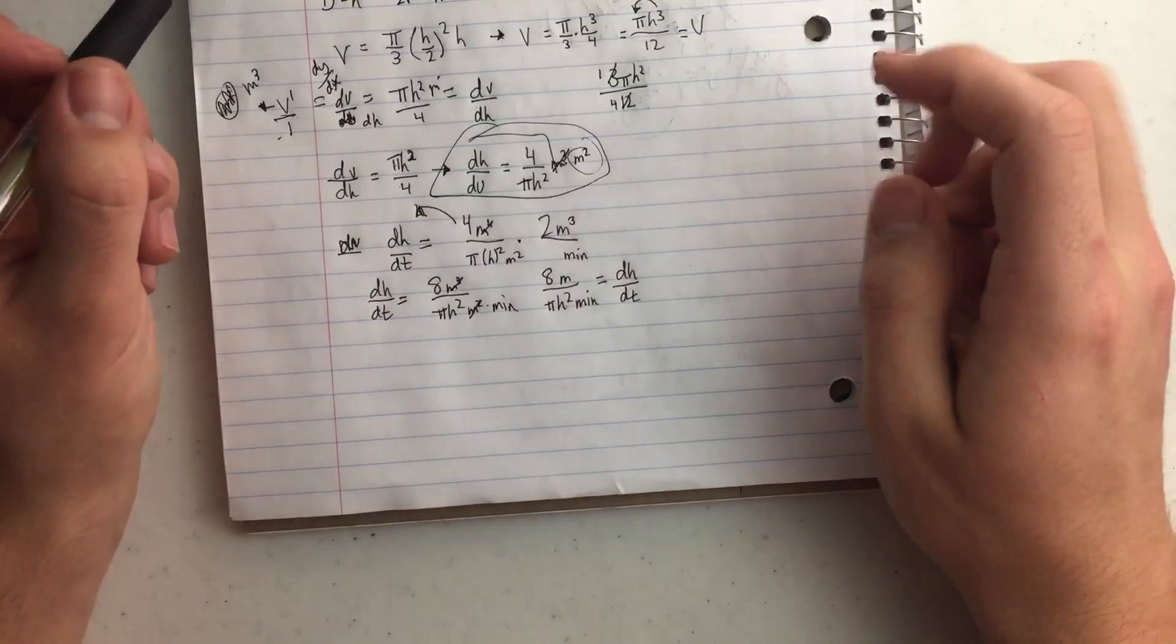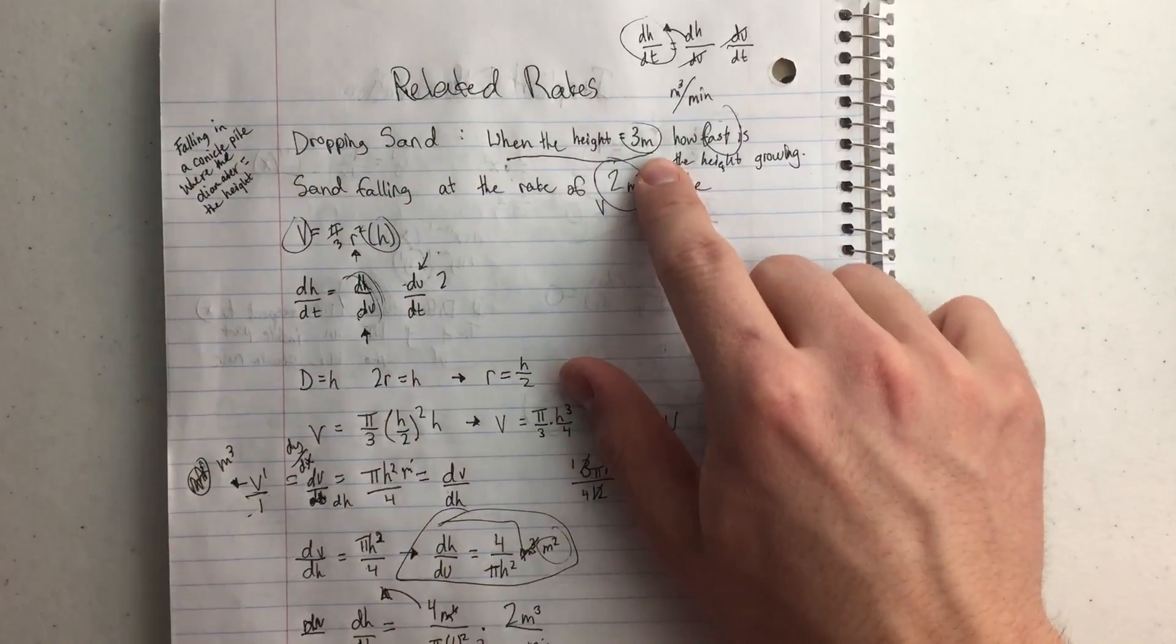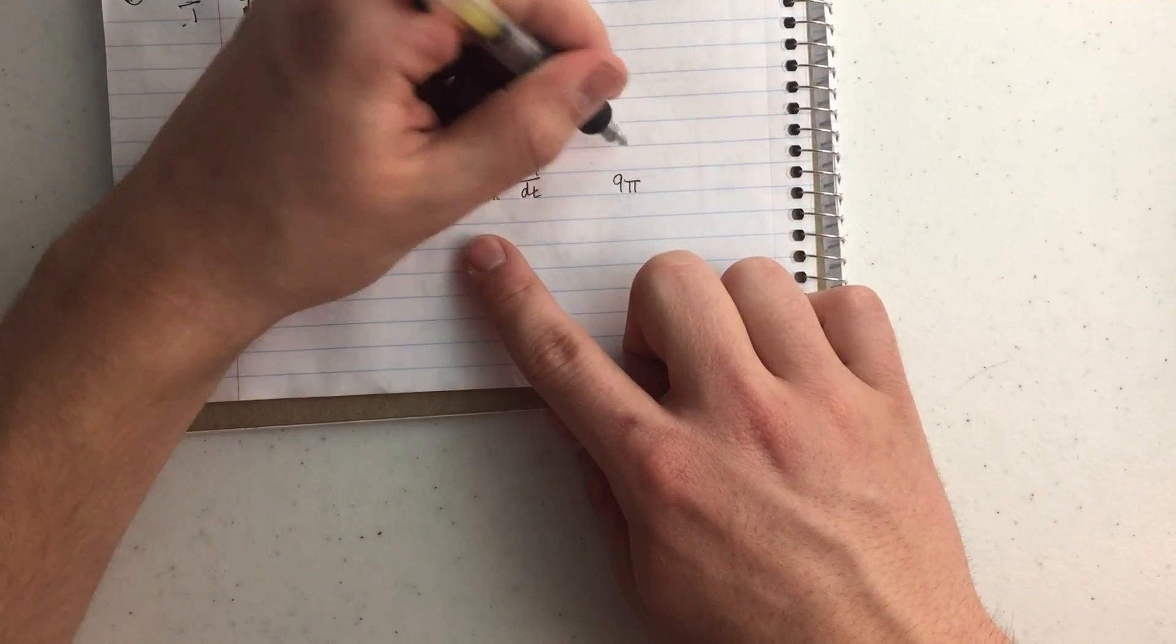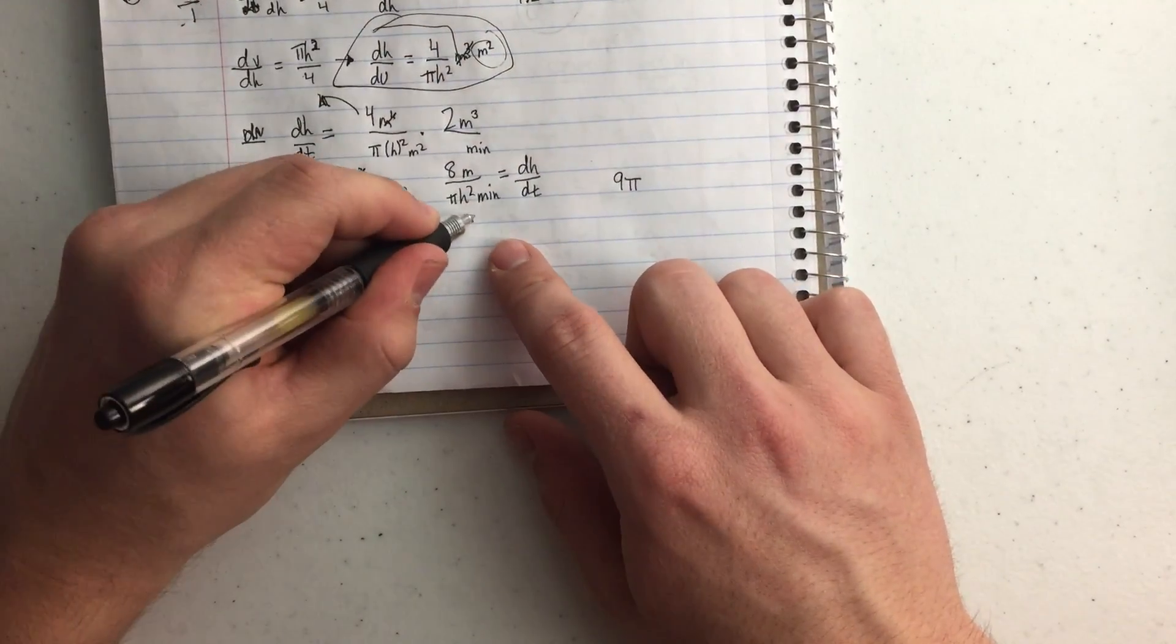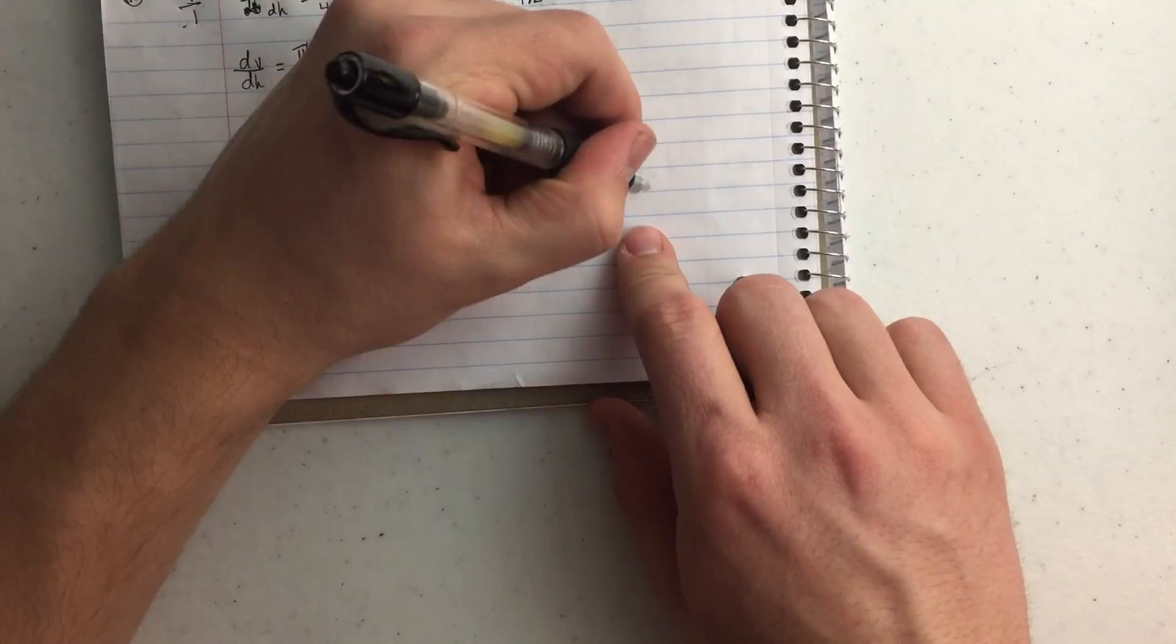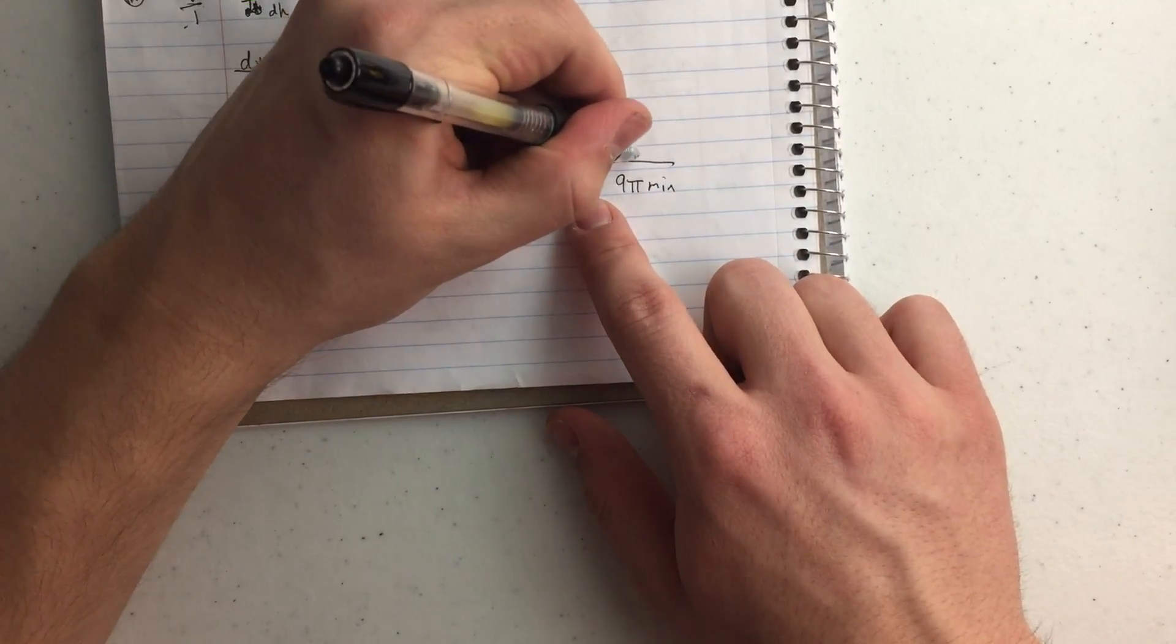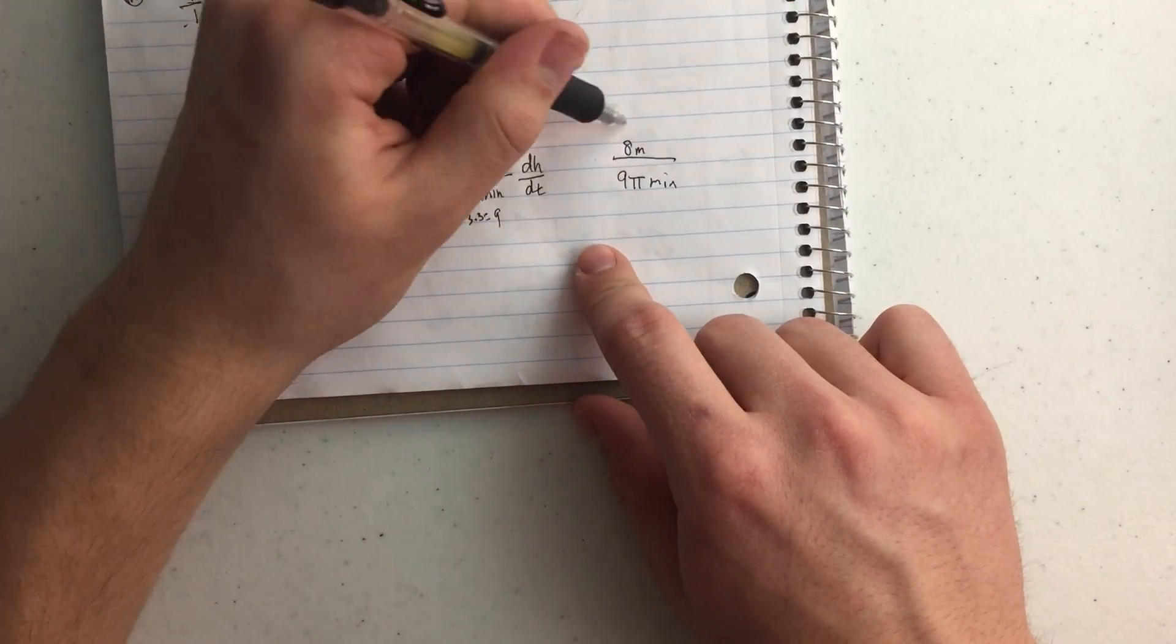So when it says, going back to our question, when it's 3 meters tall. So I'm going to plug in 3 for h. So I'm going to get 9 pi on the bottom because 3 times 3 is going to equal 9 per minute. And I'm going to have 8 meters because I have 8 on top. And that's my answer.